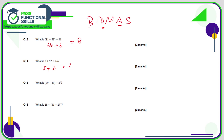Question 15: we have brackets, division, and indices. Brackets first: 89 minus 39 — actually 59 minus 39 is 20 — and we divide that by 2 squared. 2 times 2 is 4, so the question is 20 divided by 4, which is 5. Question 16: brackets first — 31 take away 27 is 4, so the question is 28 divided by 4, which is 7.